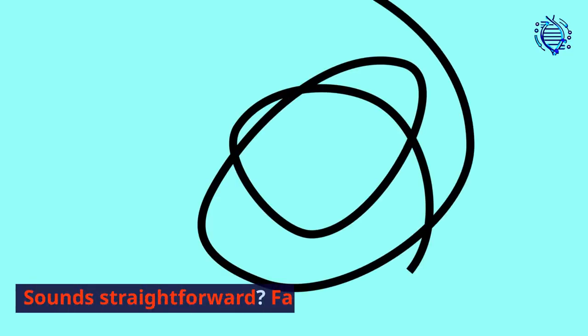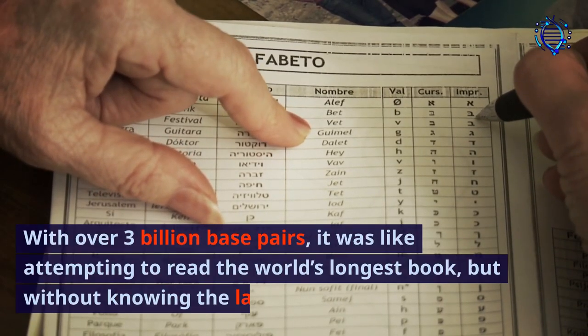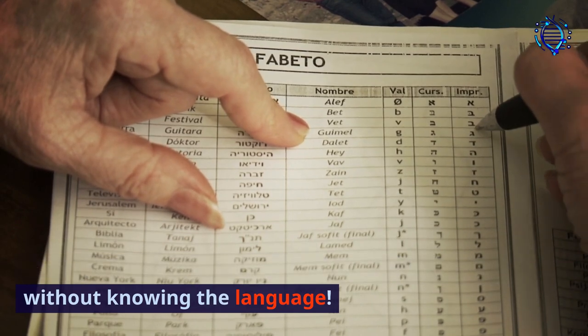Sounds straightforward? Far from it. With over 3 billion base pairs, it was like attempting to read the world's longest book, but without knowing the language.